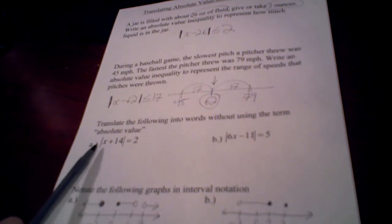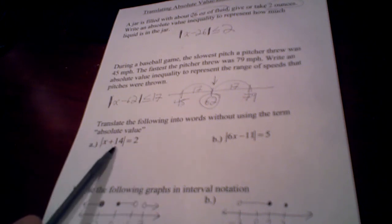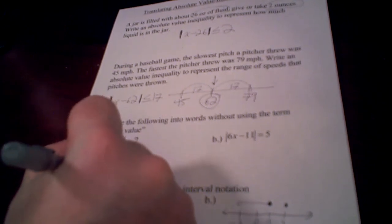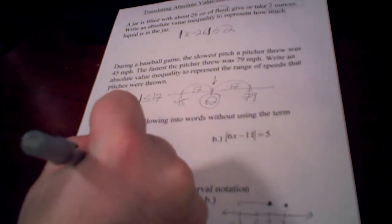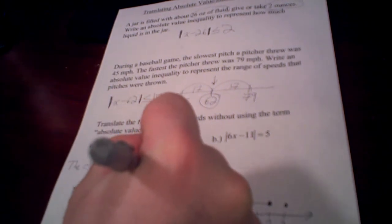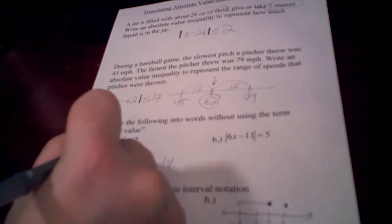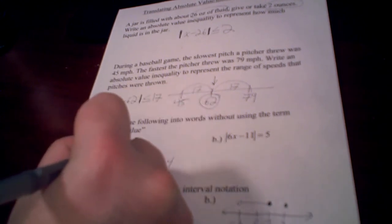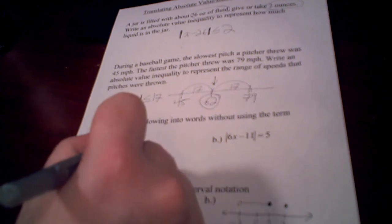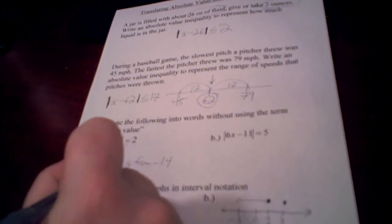So on this one, when you have the absolute value of x plus 14 equals 2, what this really is, is that the distance x is from, now you might think from 14, but it's the distance x is from negative 14. Because in reality, this plus here is actually minus negative 14. So the distance x is from negative 14 equals is 2.